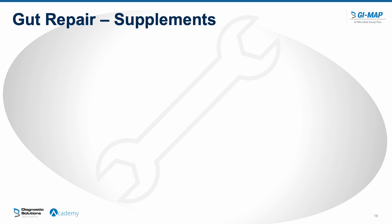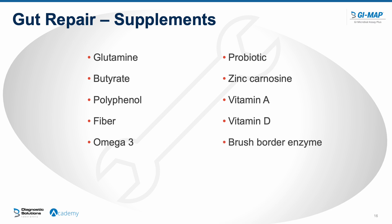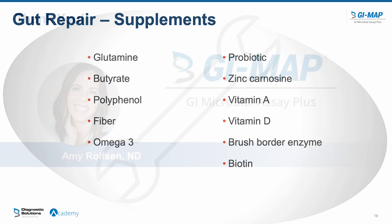There are many supplements for gut repair, and many companies make pre-formulated powders and capsules. Key favorites include: glutamine, butyrate, polyphenols (available through diet or supplements), pre-mixed fiber supplements, omega-3s, probiotics, zinc carnosine, vitamin A, and vitamin D. A brush border enzyme supplement is also important — when the gut barrier and epithelial cells are compromised, brush border enzyme production decreases, affecting digestion of dipeptides and disaccharides. Biotin (B7) is another important addition for gut repair.